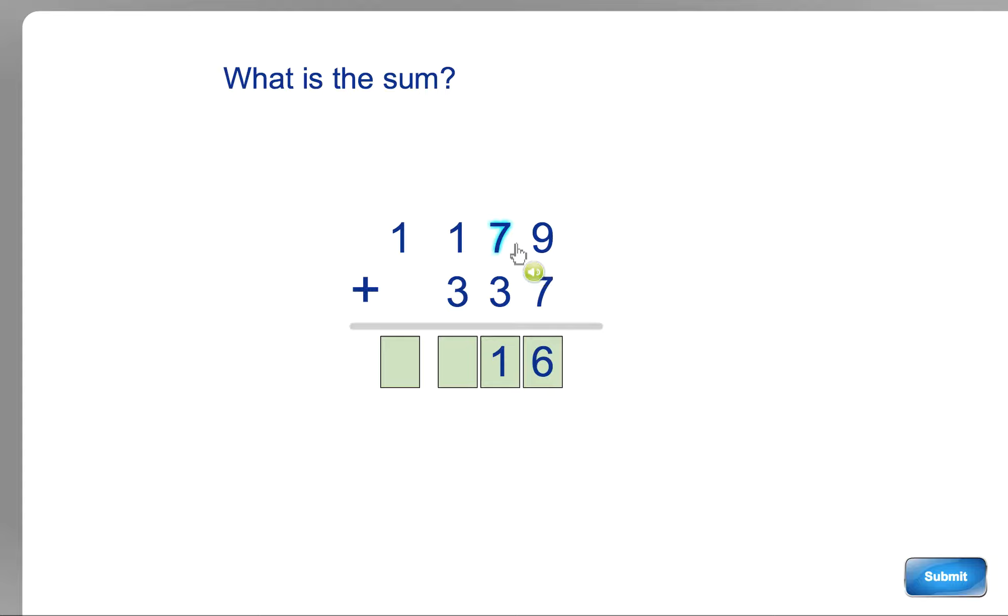Here's a bigger one. 9 and 7 is 16, so 6 and 1, 16. 7 and 3 is 10, and 1 more is 11. So we put 11 in there. And then 1 and 3 is 4, and 1 more is 5. So that one comes to 5.